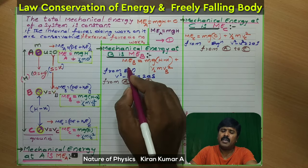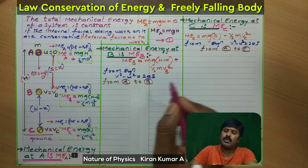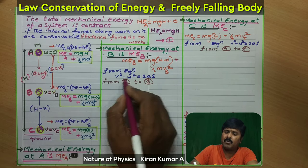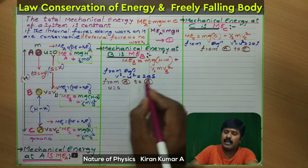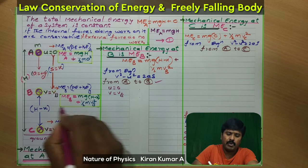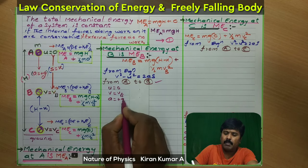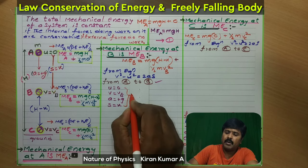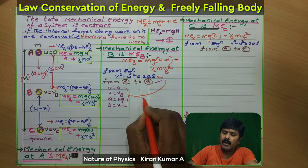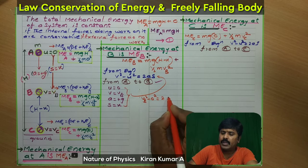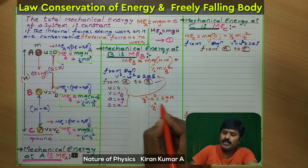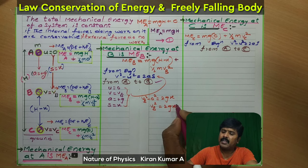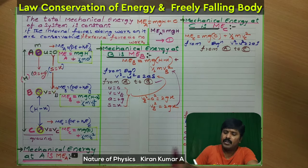Using the kinematic equation v² − u² = 2as, from position A to position B: u = 0 (freely falling body), v = vb, a = +g (downward), and s = x as clearly given in the diagram. Substituting these values: vb² − 0² = 2gx, so vb² = 2gx. This value of vb² is then substituted back into the kinetic energy term in the mechanical energy equation at point B.